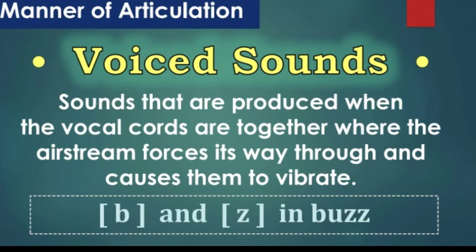When we describe consonant sounds, we see whether a sound is voiced or voiceless. Voiced sounds are produced with vibration in the vocal cords, and voiceless sounds are produced with no vibration in the vocal cords.